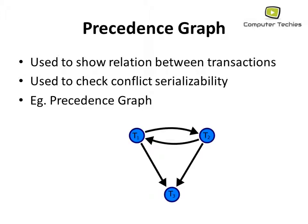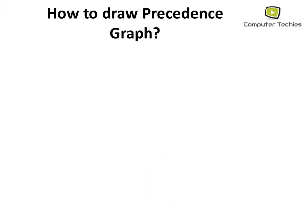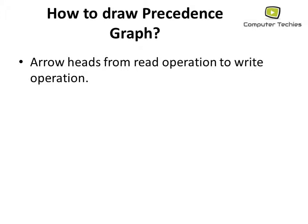Here we have an example of the precedence graph. You can see three different transactions T1, T2, and T3, with different arrows pointing from one transaction to another. Now the question is how to draw or design a precedence graph. The condition is that arrowheads go from read operations to write operations, as seen in the diagram.